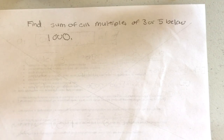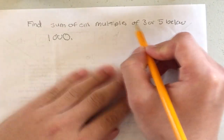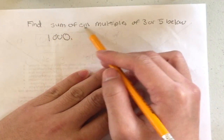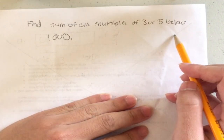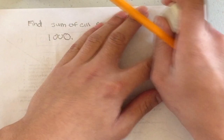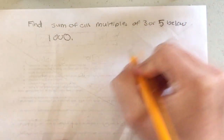We're going to find one mathematical equation to solve this problem so we don't have to use a for loop to go through all the numbers and find the mod. First of all, before I start, we need to find the sum of all multiples of three or five below a thousand.